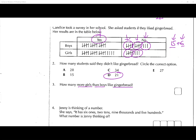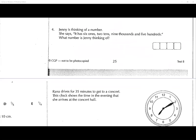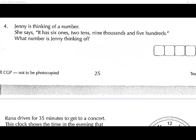We're looking at this column here. How many more girls than boys? The boys and girls were all equal up to a point, and the girls have one extra. We can physically count four of them — so the answer is four more girls than boys liked gingerbread.